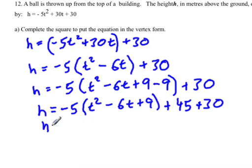So then this is h squared, or sorry, h is equal to negative 5. Now t squared minus 6t plus 9.